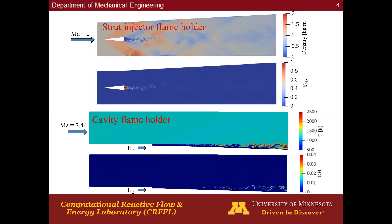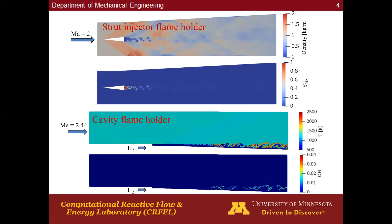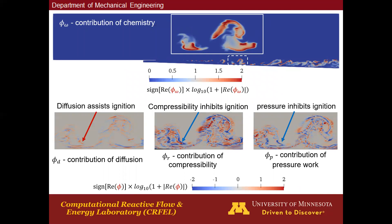There are two major strategies to stabilize the flame in such a harsh condition. One is the strut injector flame holder; the other is the cavity flame holder below. In our group, we use high-fidelity CFD simulation to investigate both types of flame holders. To understand what's going on during the flame stabilization and auto-ignition process, we develop very advanced computational diagnostic tools. Using these tools, rather than just gathering raw data, we can understand which physical and chemical processes control and enhance flame stabilization and auto-ignition.